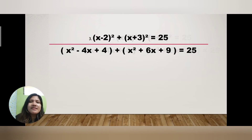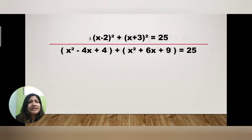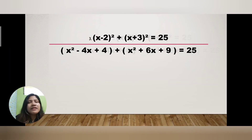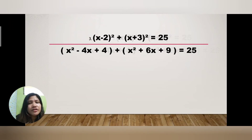Square the last term: (−2)² = positive 4. So (x − 2)² = x² − 4x + 4. Copy the plus operation, then expand (x + 3)²: x² for the first term, 2 times x times 3 = 6x for the middle term, and 3² = 9 for the last. So (x + 3)² = x² + 6x + 9, and the full equation is x² − 4x + 4 + x² + 6x + 9 = 25.